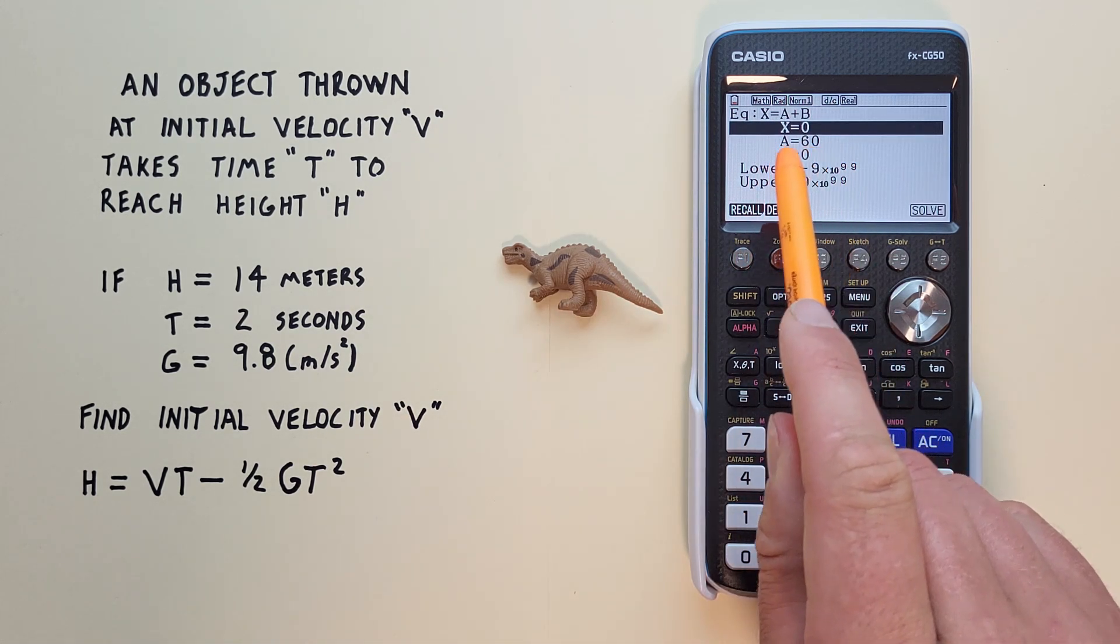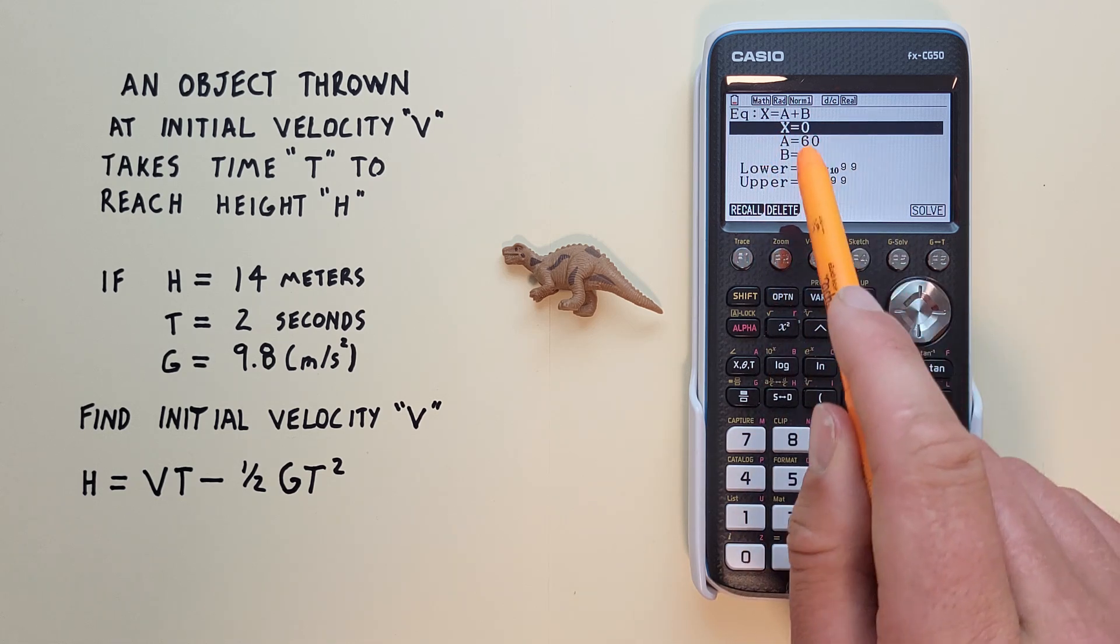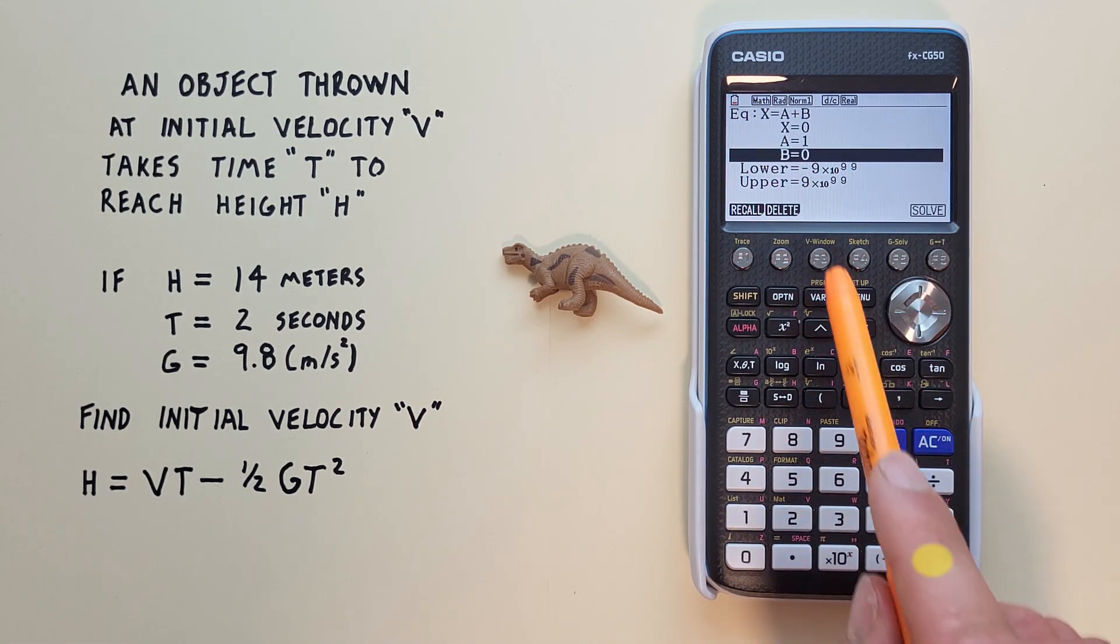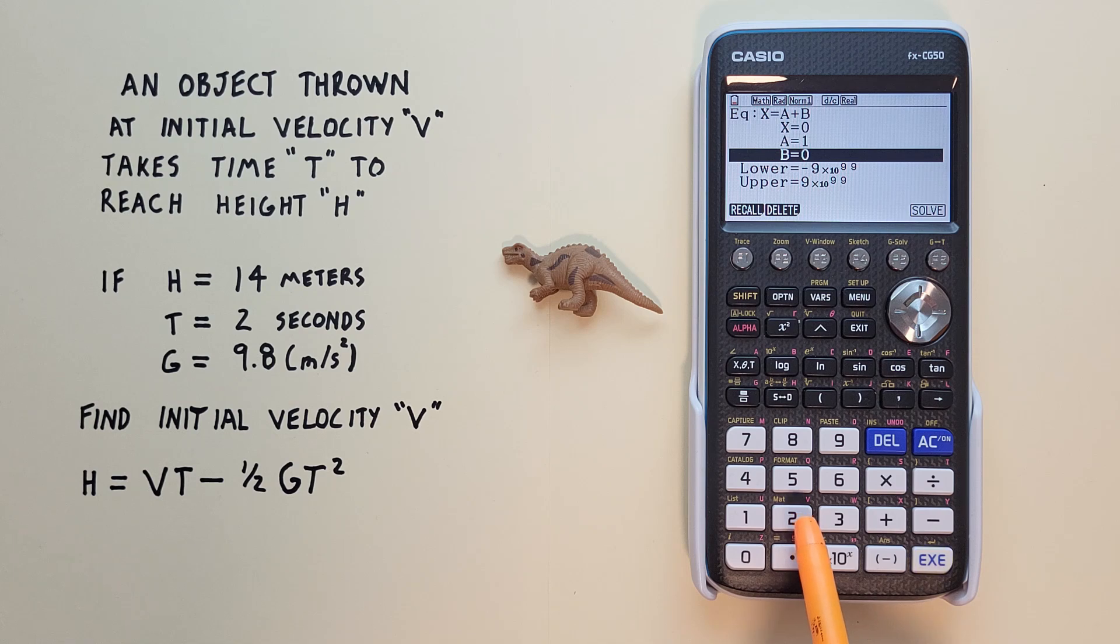Just hit EXE one more time. We have that A variable saved from our last equation, but we can overwrite that here. Let's do something basic. Let's just do 1 for our A.